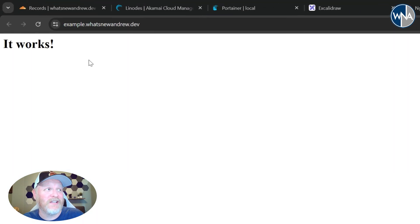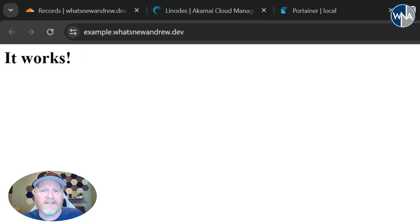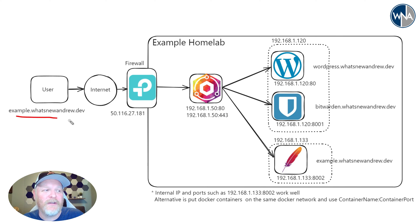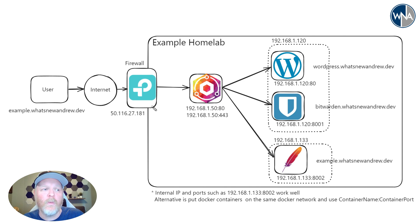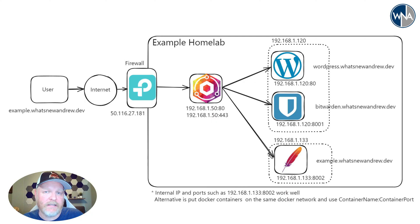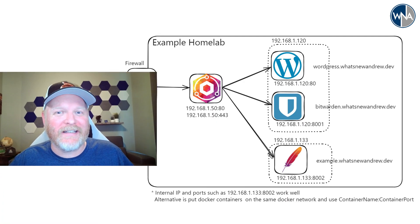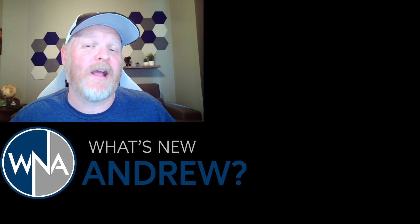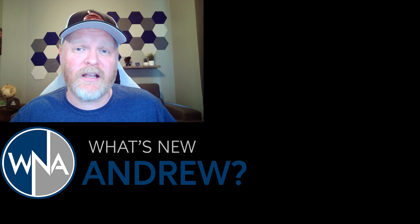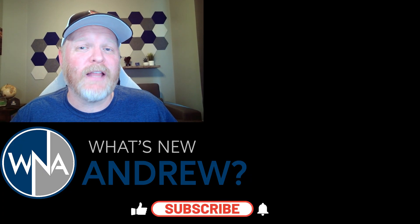It works! Navigating to example.whatsnewandrew.dev opens the Apache default page confirming it's live. To summarize: we set up a DNS A record pointing our domain to our IP, installed Nginx Proxy Manager forwarding ports 80 and 443, deployed an Apache web server container on the same Docker network, configured the proxy host in NPM, and tied an SSL certificate to it. If you get stuck, throw questions in the comments. If you liked this video, give it a thumbs up and subscribe.